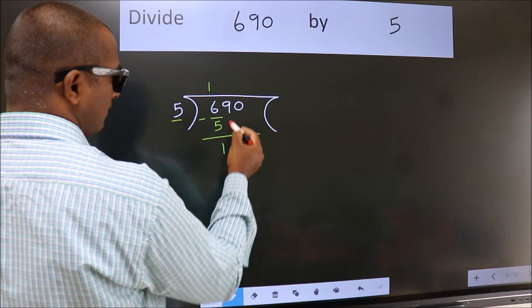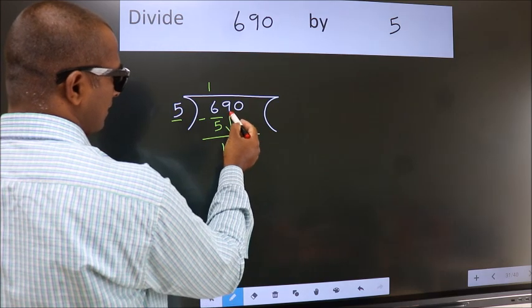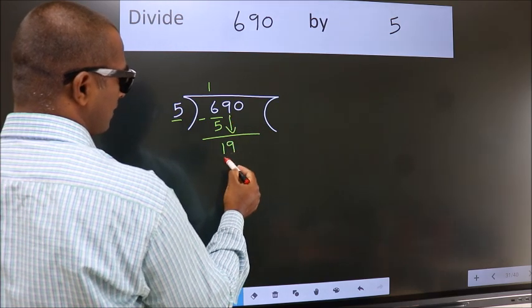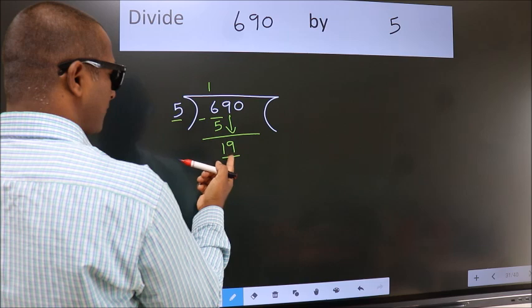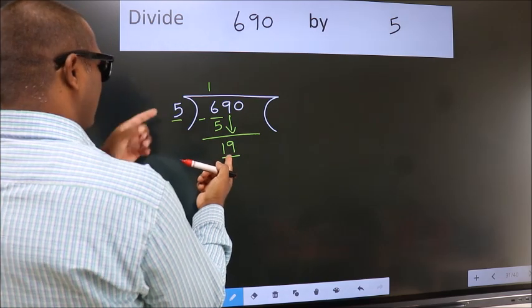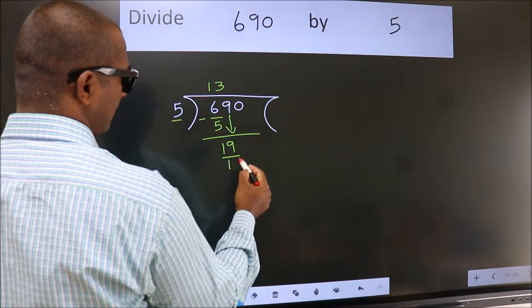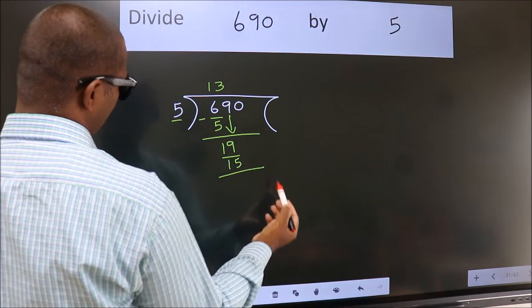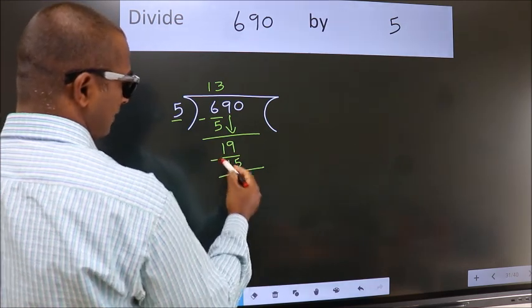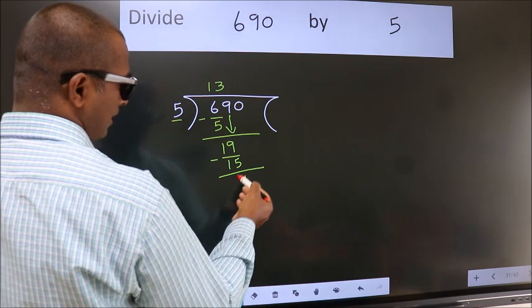After this, bring down the beside number. So, 9 down. So, 19. A number close to 19 in 5 table is 5 threes 15. Now, we should subtract. We get 4.